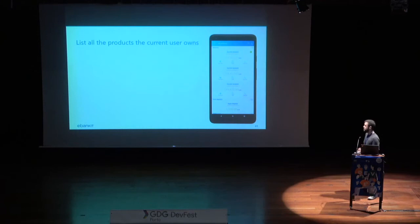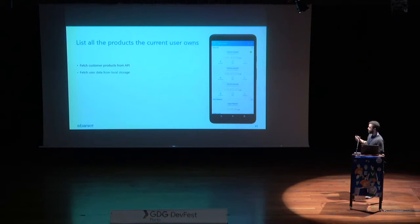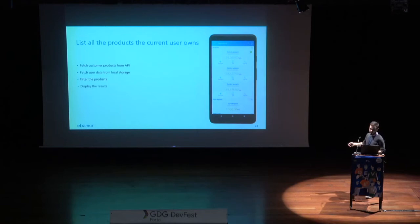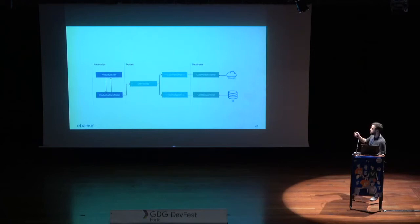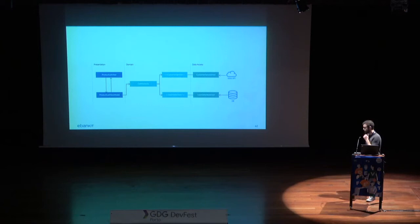Here's one of the features we have: we let users list all the products they currently own at the bank — accounts, loans, deposits, credit cards. First we fetch the customer products from the API, then get some user data from local storage, filter the products using that local data, and display the results. This is the actual business logic of the feature. Architecturally, using the ViewModel component — though it's not dependent on that — the central point is the GetProducts interactor, which uses the customer service to get the product list and the user data store to get the user information it needs.